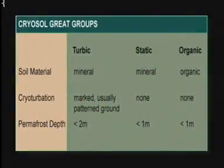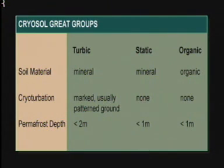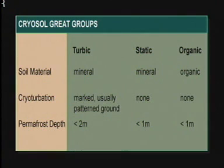In the Canadian Systems Soil Classification, three cryosolic great groups are recognized based on the composition of the parent materials — mineral or organic — and the degree of cryoturbation that has occurred. These are the turbic, static, and organic great groups.